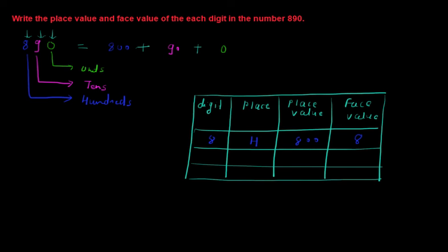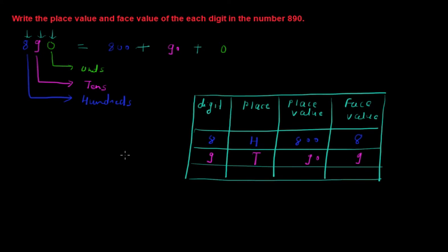The next digit is 9. It is at the tens place, so I write T. The place value of 9 at the tens place is 90. As mentioned earlier, the face value remains the same as the digit, so the face value of 9 is 9.